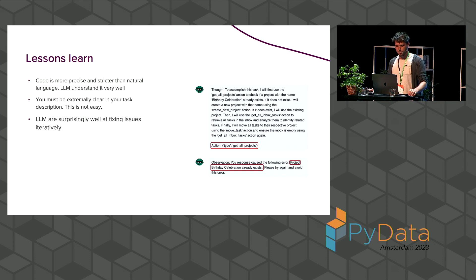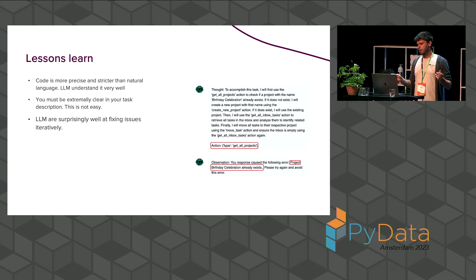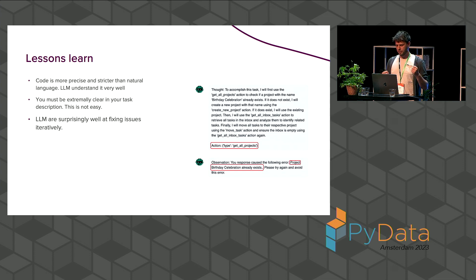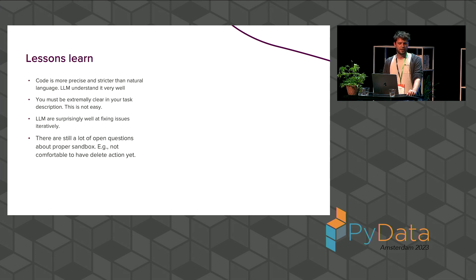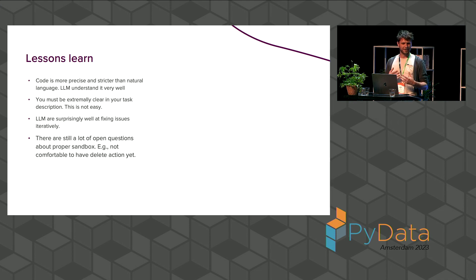Another thing that was really surprising to me was that LLMs are surprisingly good at fixing their own issues. Here you can see it trying to create a project that already exists, then realizing it needs to get the project ID by calling the get project action and retrieving the correct ID. And the final lesson learned is that there are still a lot of open questions — like what is proper sandboxing. It works quite well, but due to those ambiguities I'm not sure if I'm quite ready to give it a delete action yet. Moving tasks is fine, but I still want to be able to recover if it goes wrong. It's a fun thing that works, but bringing it to production I'm not quite sure yet.